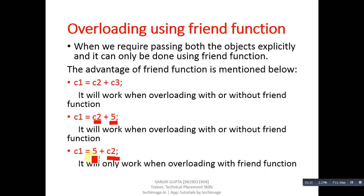The first argument is responsible for calling a function, known as the implicit argument, and it must be an object. Here the first argument is a constant value, so it can't be passed implicitly. If we want 5 and c2 to be passed explicitly, then we convert the overloaded function into a friend function. This is the scenario where you apply a friend function.